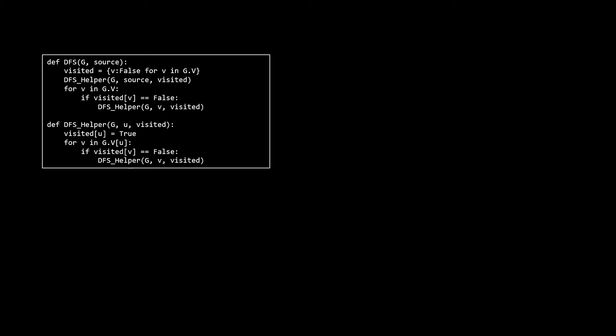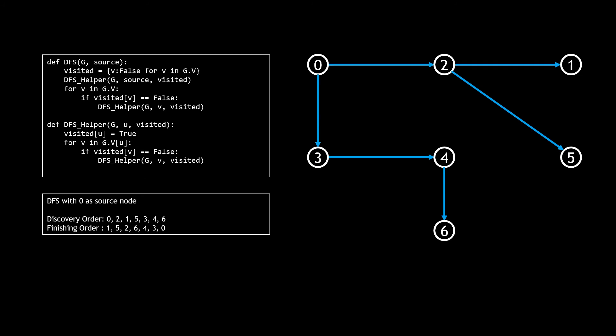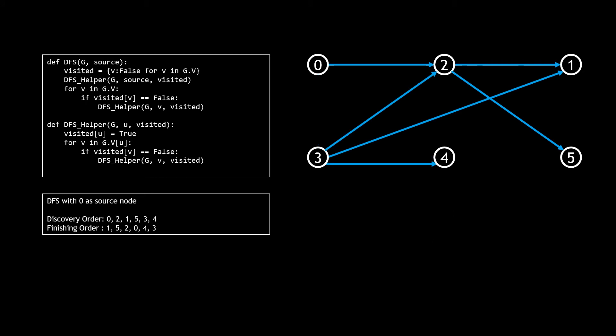Finishing time describes the relative order of when vertices are finished being explored. A vertex is finished when there are no more deeper vertices it can explore. In code, a node is discovered at the beginning of the recursive call and finished at the end. Verify that the following discovery and finishing orders make sense for the given graph when DFS runs with node 0 as the source. Multiple valid orders exist depending on which vertex is visited first recursively.